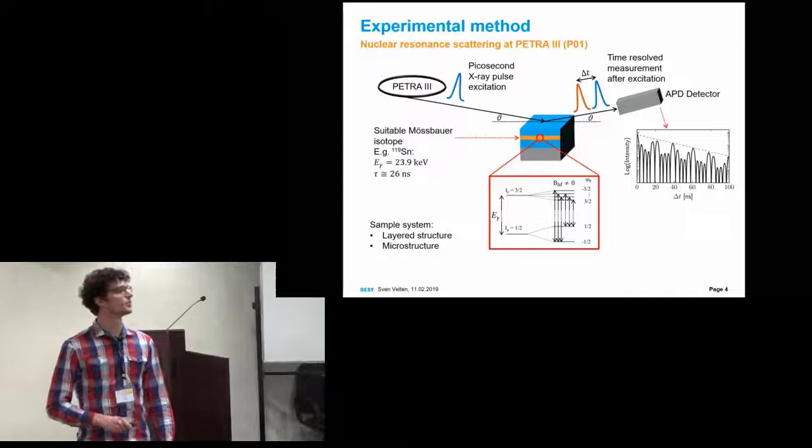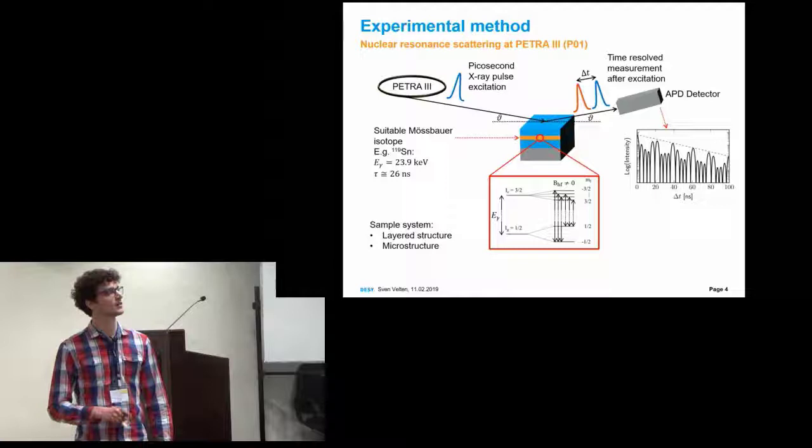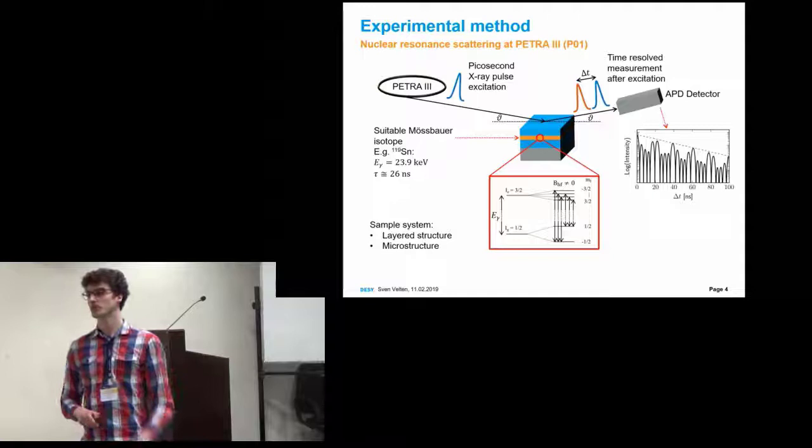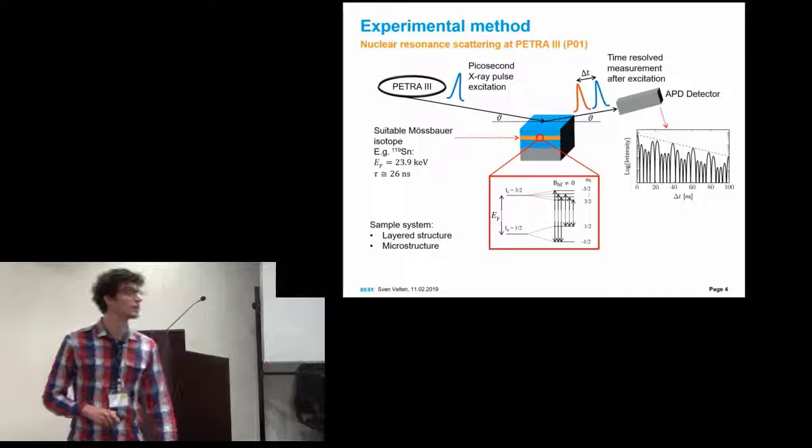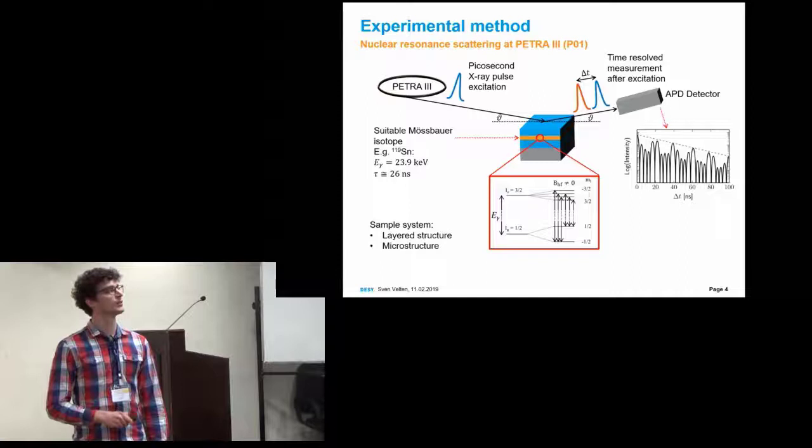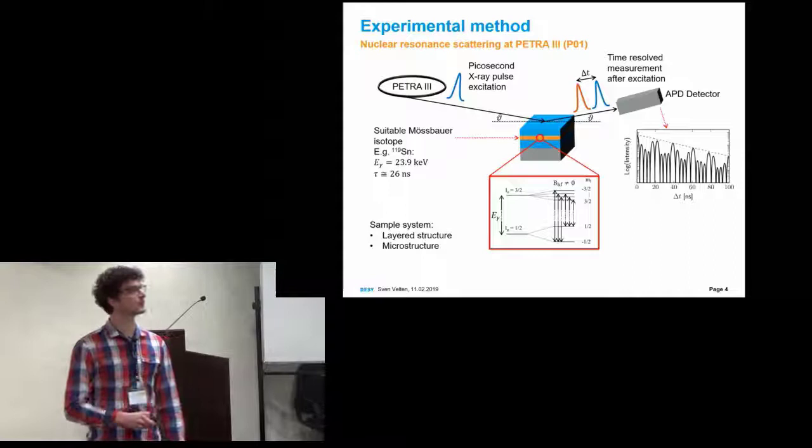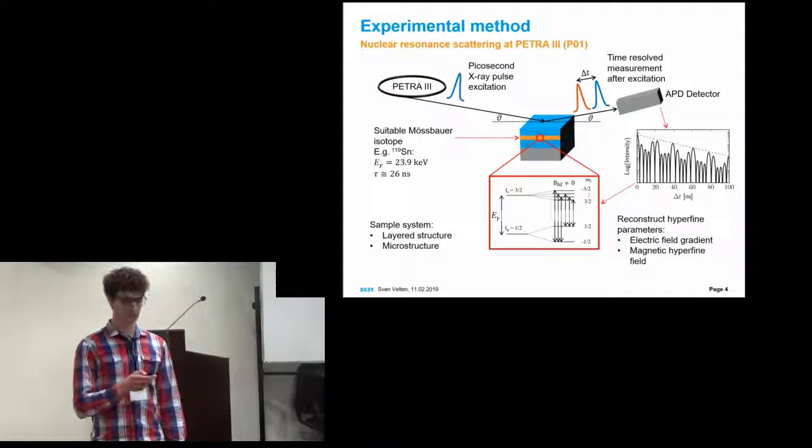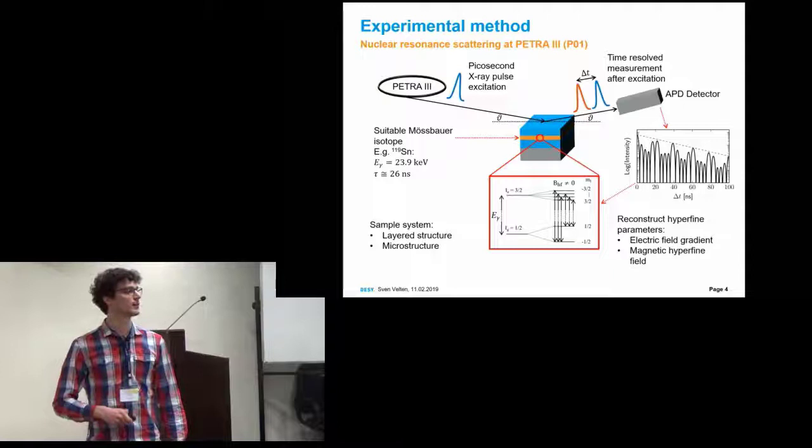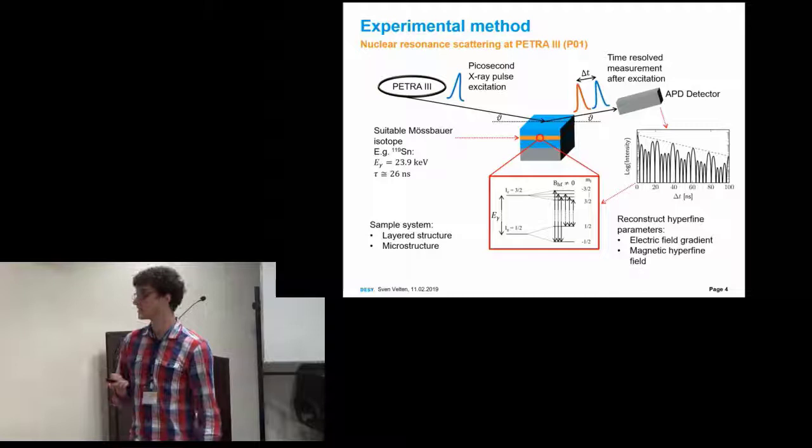In the case where we have just one transition, we would expect in this logarithmic plot just a single line. Here we resonantly excite all six lines, because the energy width of our synchrotron is much broader than these line splittings. We get a quite complicated coherent superposition of all frequencies. This pattern is called beat pattern. From this beat pattern, we can reconstruct hyperfine parameters, the electric field gradient or the magnetic hyperfine field, and we can reconstruct the strength and also, to some degree, the orientation.